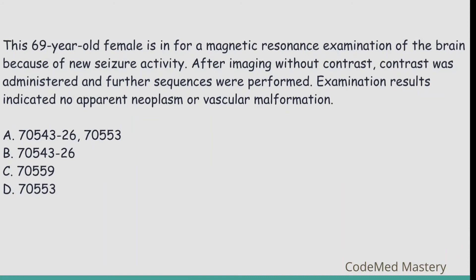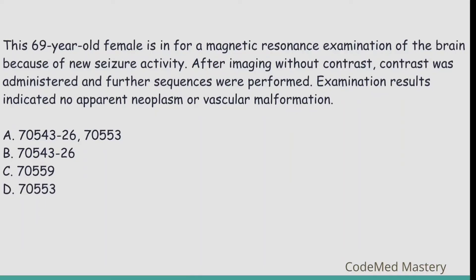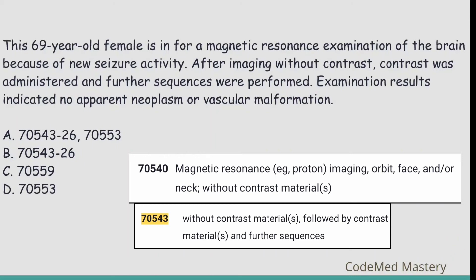Don't forget to show your support by liking, sharing, and subscribing to Code Med Mastery. Next question: a 69-year-old female is in for a magnetic resonance examination of the brain because of new seizure activity. After imaging without contrast, contrast was administered and further sequences were performed. Examination results indicated no apparent neoplasm or vascular malformation. Option A: 70543 — magnetic resonance proton imaging, orbit, face, or neck, without contrast material followed by contrast material and further sequences. However, the scenario involves the brain, not orbit, face, or neck — eliminate option A. Option B also includes 70543 with modifier 26 — since 70543 is wrong, eliminate option B directly.